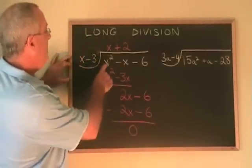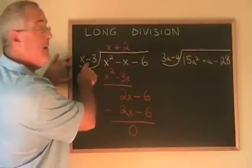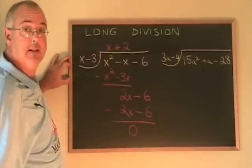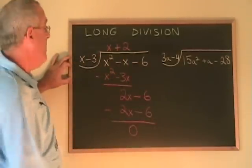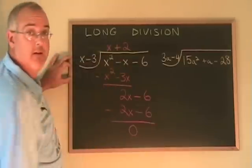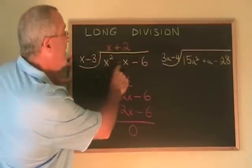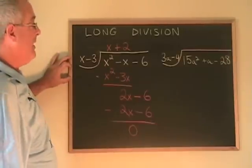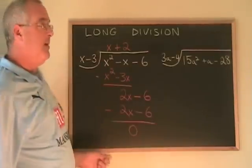That means this trinomial divided by x minus 3 gives x plus 2 as its answer. And you can verify by multiplying these two binomials together and make sure that you get this trinomial. Let's look at the second example, which is a little bit more complicated.